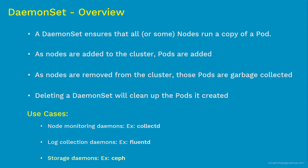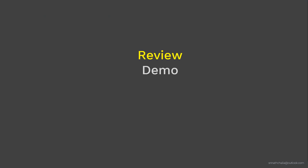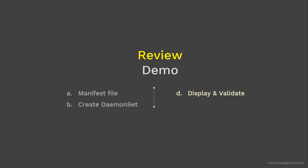Now it's time to move to the Review Demo section. In the next few slides, we'll review the demo performed on a live Kubernetes cluster. First, we'll see what goes into the DaemonSet manifest file. Then we'll deploy FluentD, a log collection application, using DaemonSet. After that, we'll display and validate the DaemonSet to make sure it's created as expected. Finally, we'll clean up everything created in this demo.